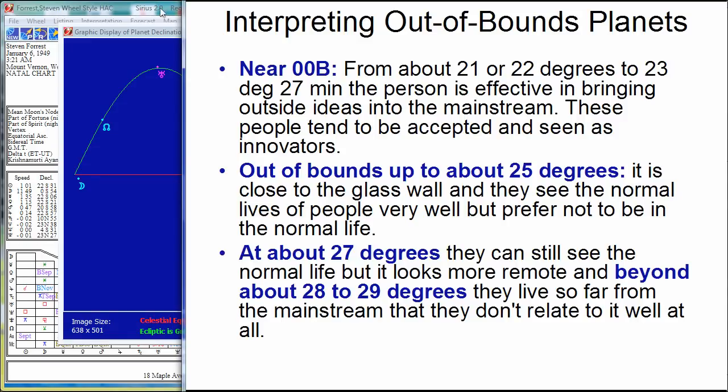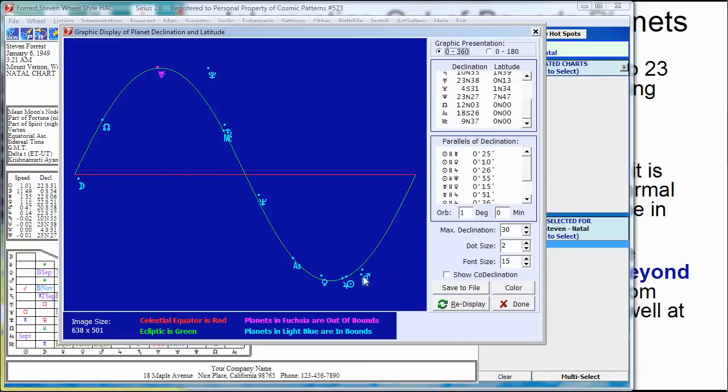They're near, let's go back to the chart, all these planets, and he's got a zillion of them, right? He's got sun, mercury, I mean, every inner planet except the moon is close to being out of bounds. And notice where the moon is, and I'll talk about this in a minute. The moon, by contrast, is almost on the celestial equator.